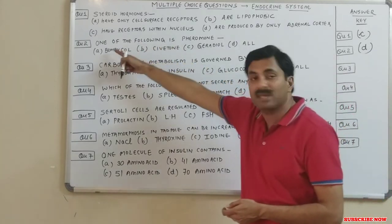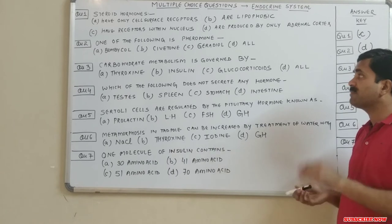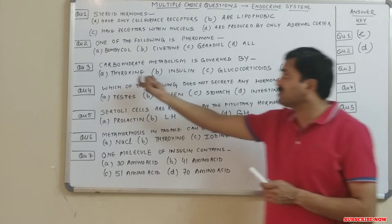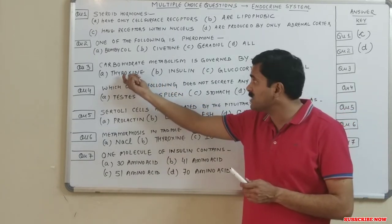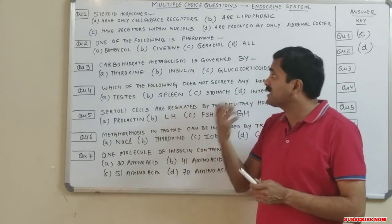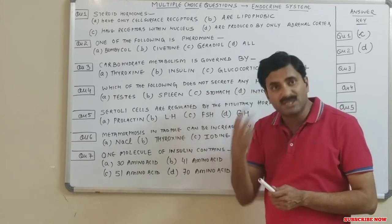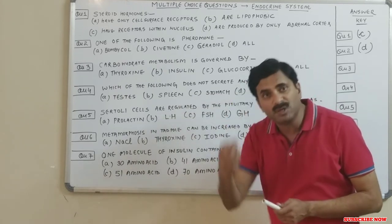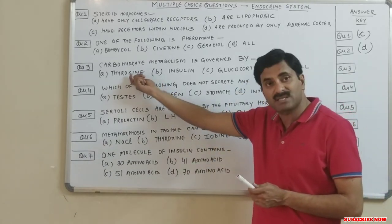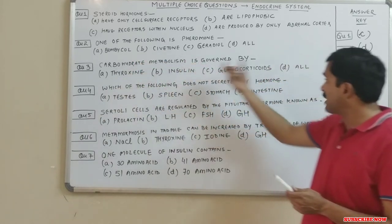Question number three: carbohydrate metabolism is governed by which hormone? Thyroxine does control carbohydrate metabolism because it is concerned with the metabolism of carbohydrates, fats, and proteins. So thyroxine is definitely related to carbohydrate metabolism.